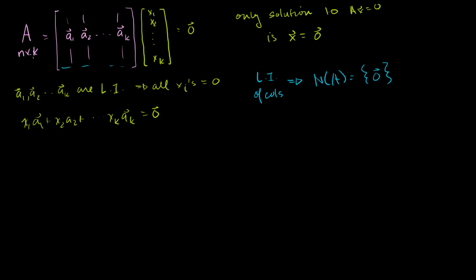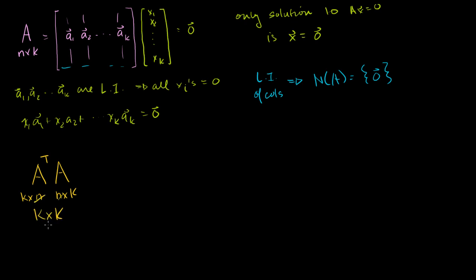Now A is n by k, so we don't know its dimensions — it may or may not be a square matrix, so we don't necessarily know whether it's invertible. But maybe we can construct an invertible matrix with it. If we take A transpose times A: A is n by k, A transpose is k by n, so A transpose A is a k by k square matrix. That's a nice place to start. Let's see if it is actually invertible.